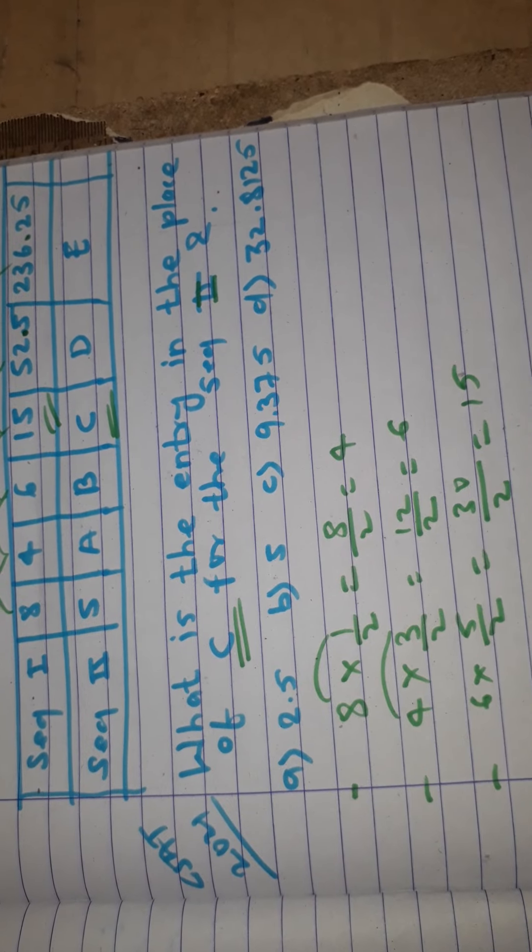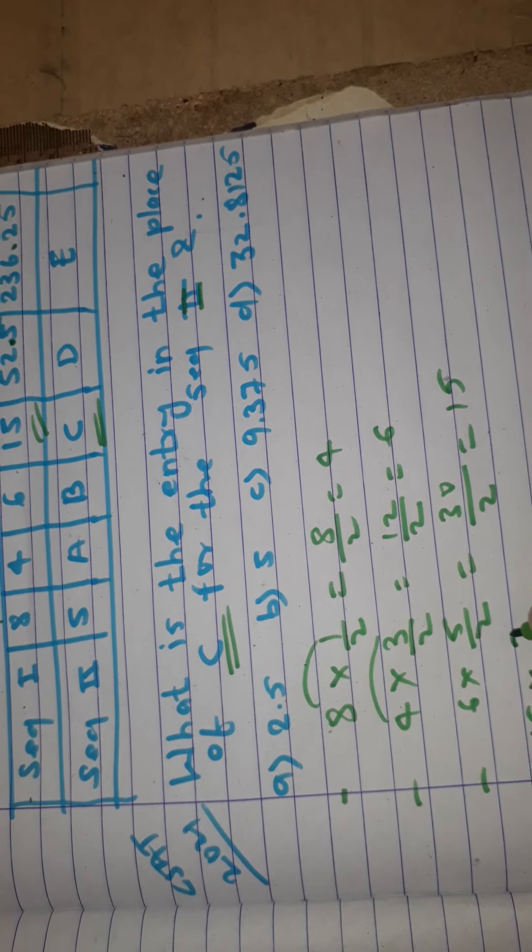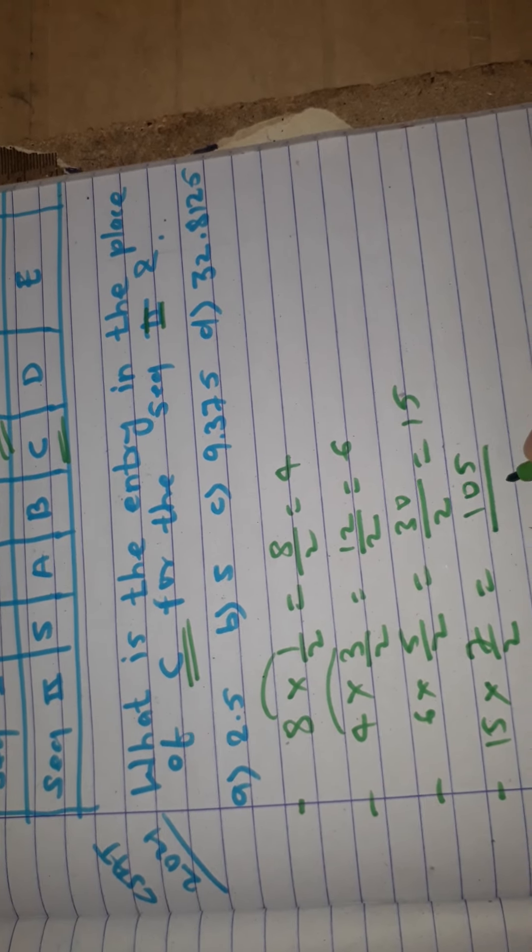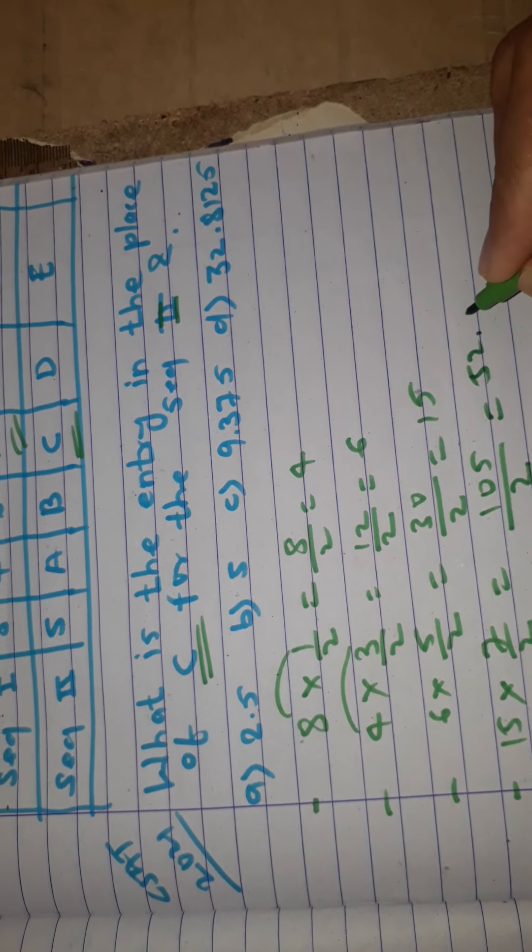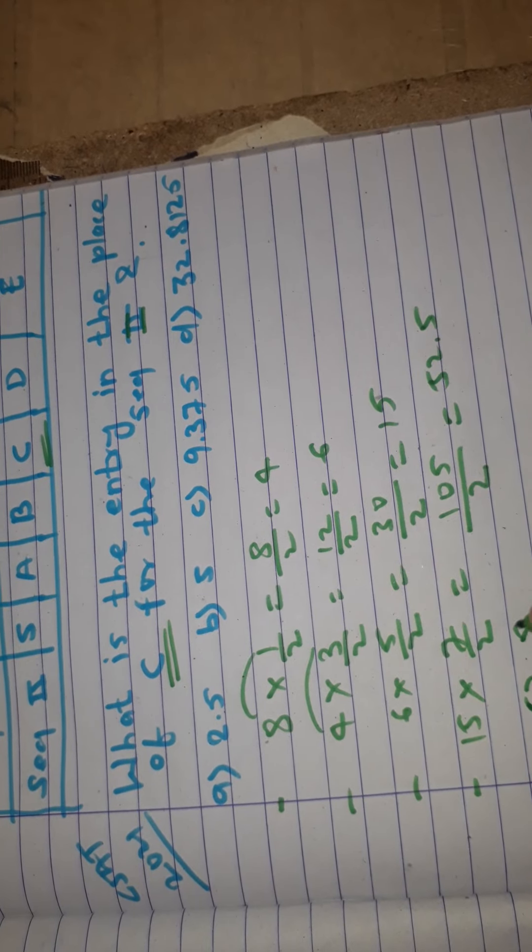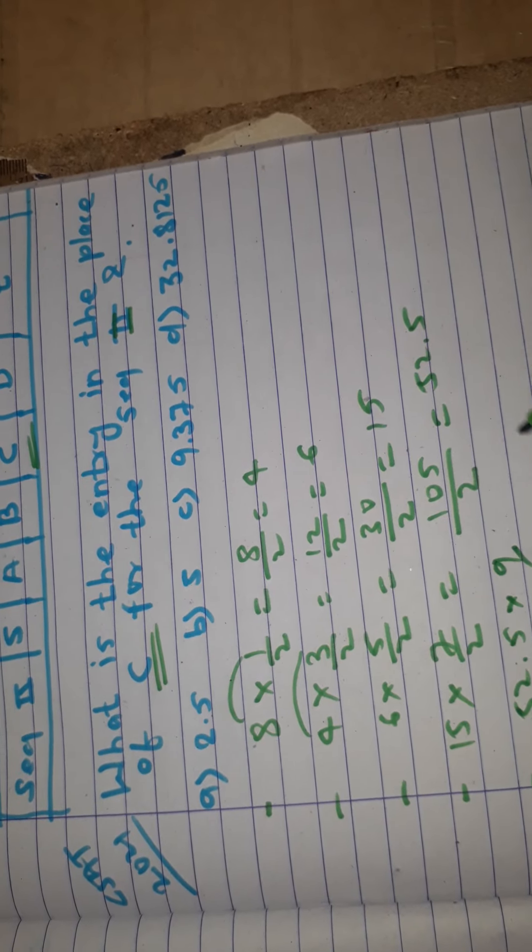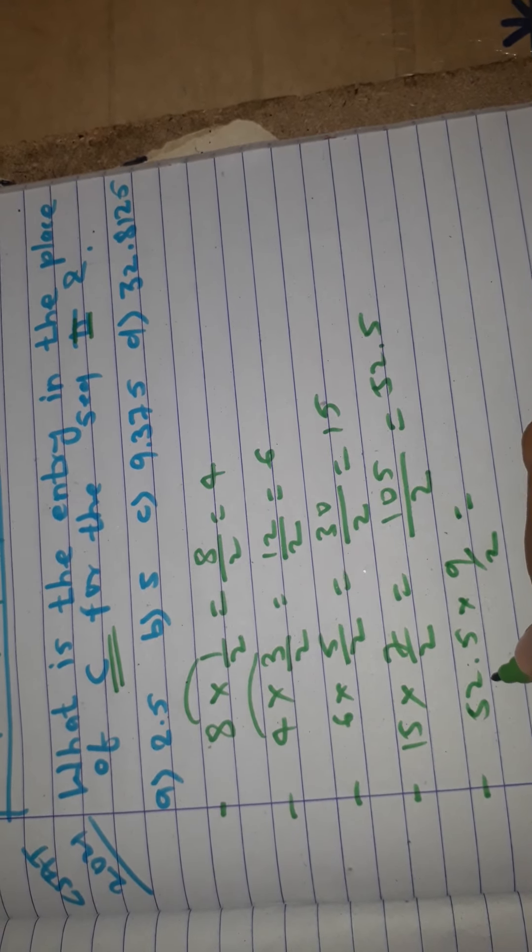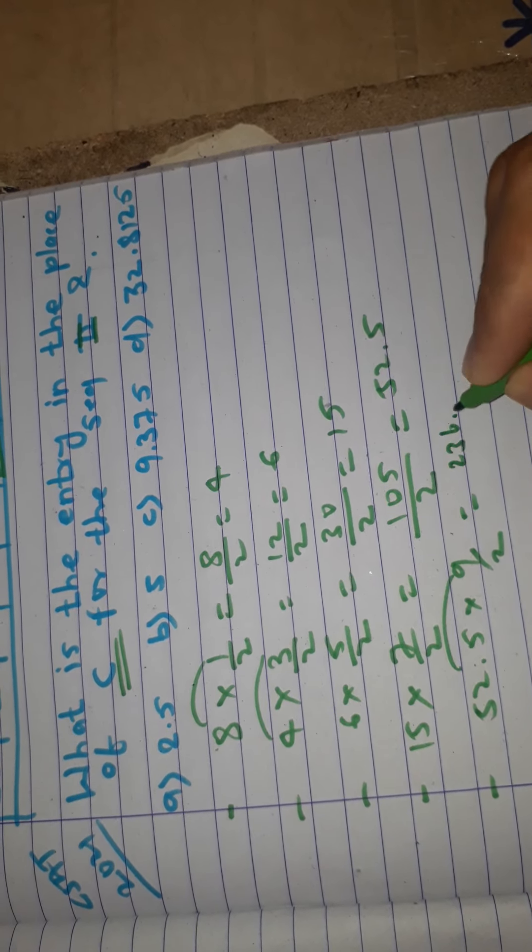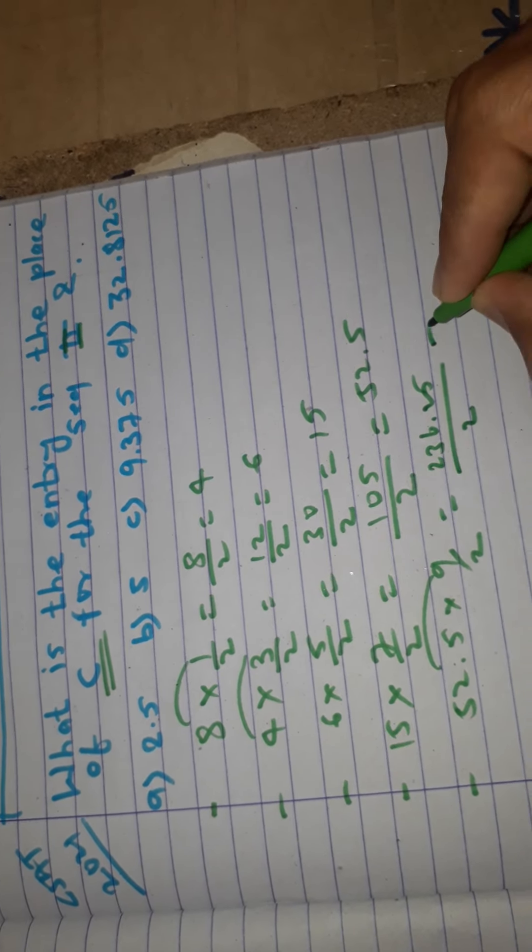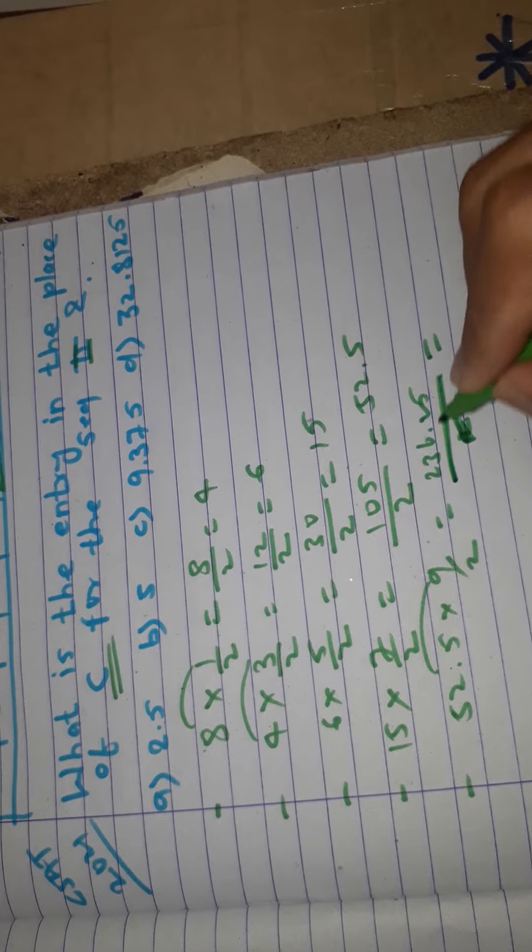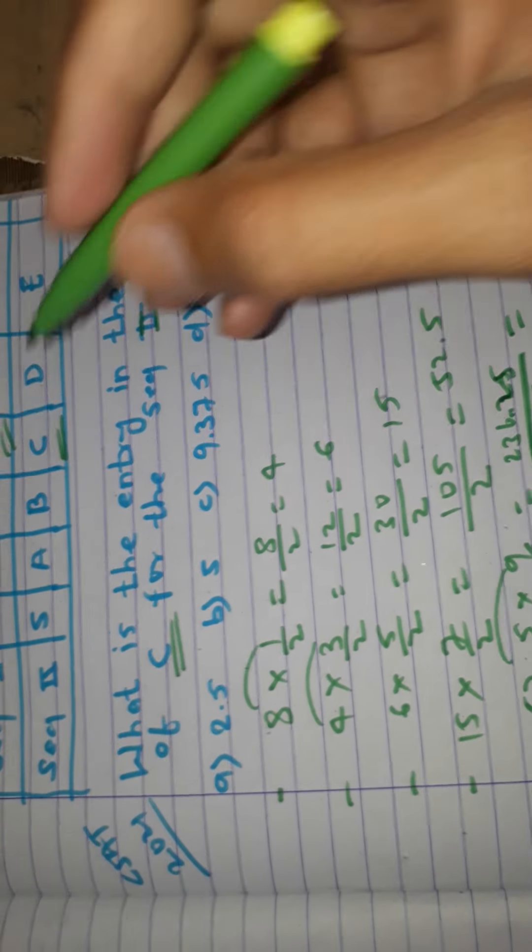Continuing the pattern, 15 into 7/2 gives us 52.5. Then 52.5 into 9/2 equals 236.25. Now for sequence 2.